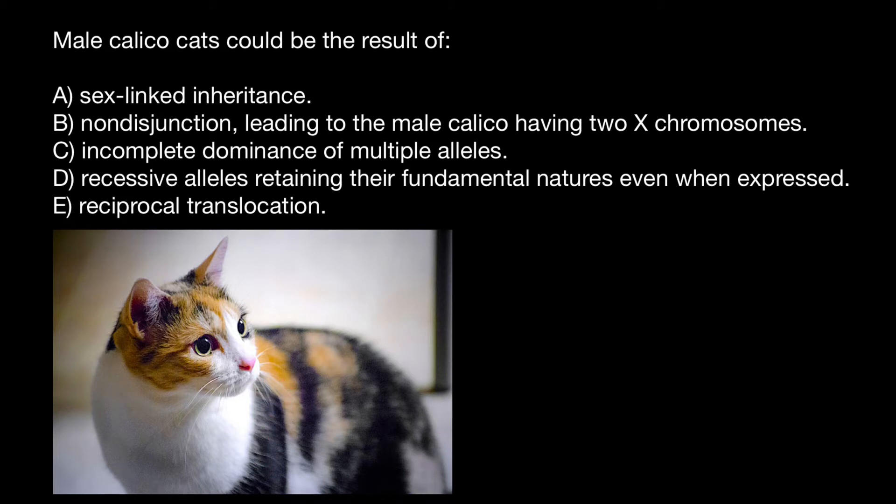In Calico cats gene pool, we can find two alleles, which specify black color and orange color. And these two alleles reside on the X chromosomes. So for example, female who has two X chromosomes can be of the following genotypes, can be with B B, or B O, or O O genotype.